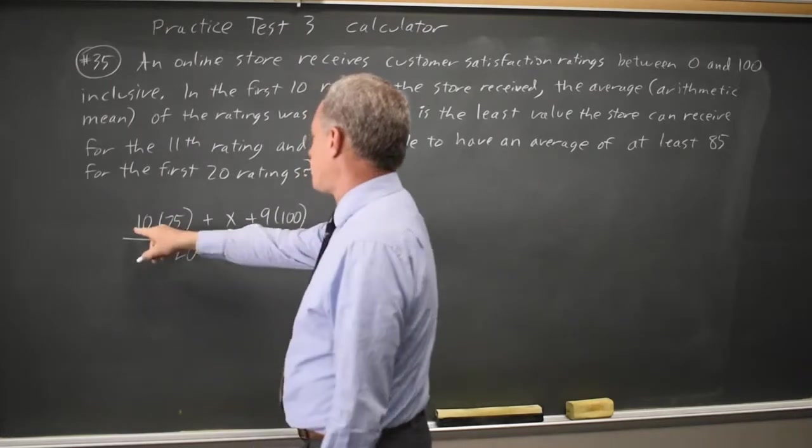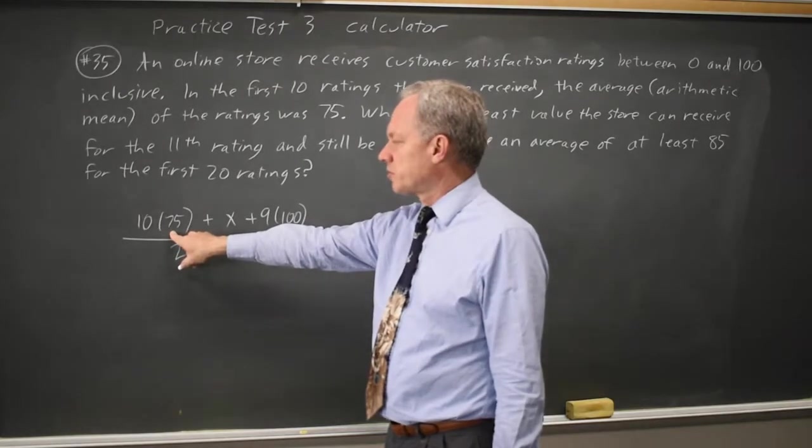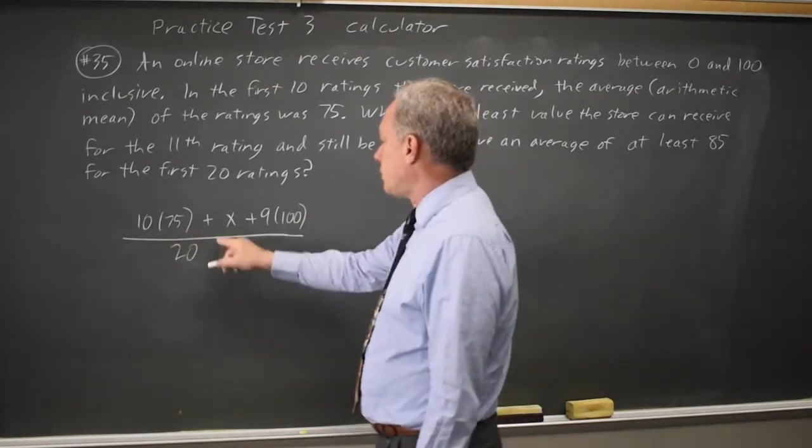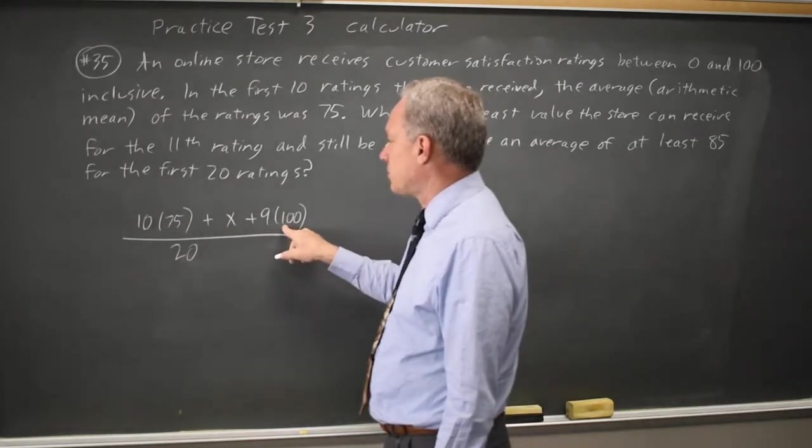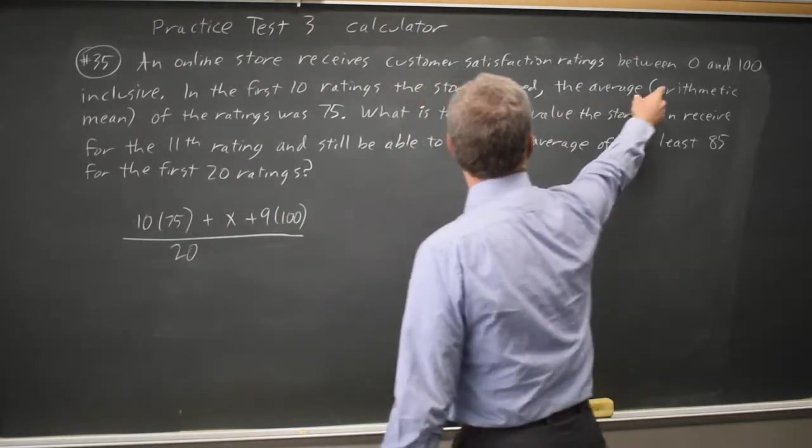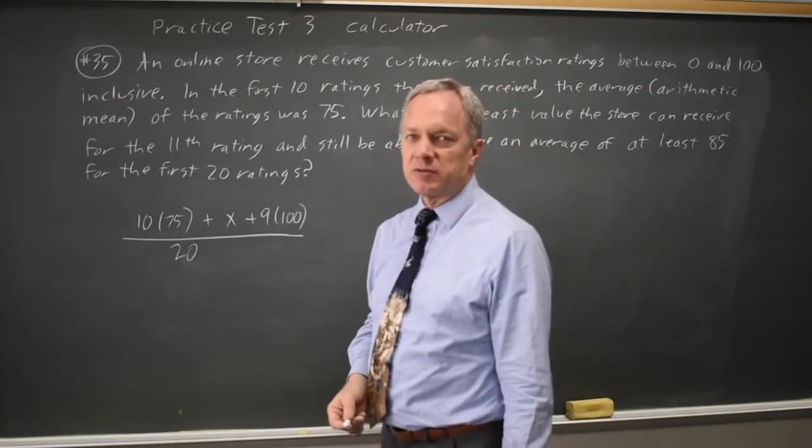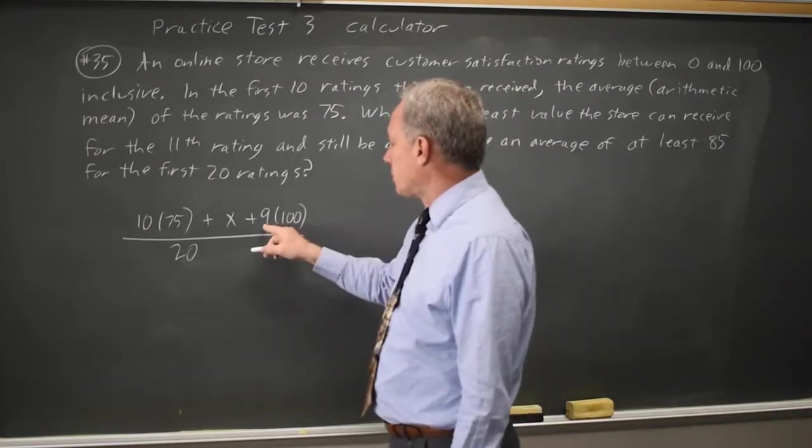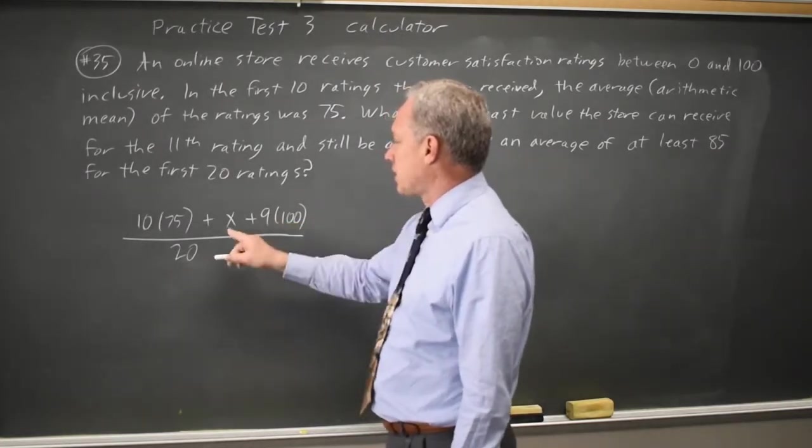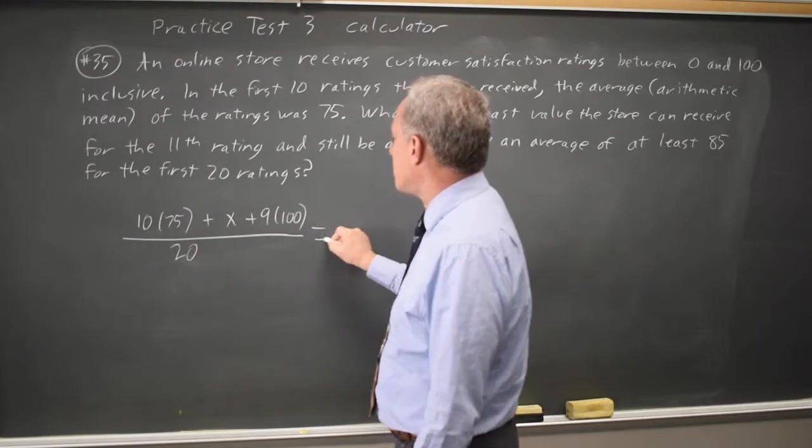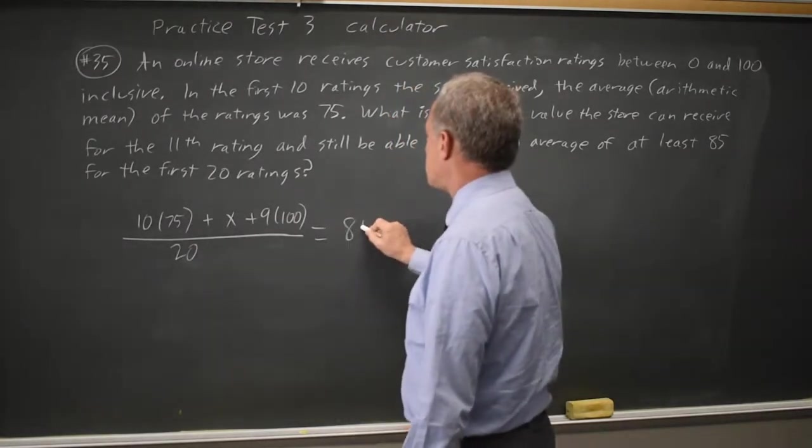So here we have the existing scores that may not have been 75, but you can treat them like they are because their average for the first 10 was 75. We have the lowest possible score X, which means the last 9 scores had to be the highest possible, and 0 to 100 inclusive means you can give them a score of 0 or you can give them a score of 100. We're including both endpoints, so we used 100, the highest possible, because that allows X to be the lowest possible. And this is the average, and we want that average to be at least 85.